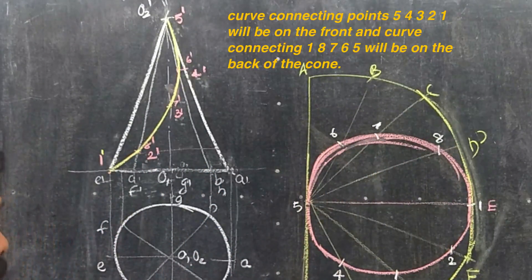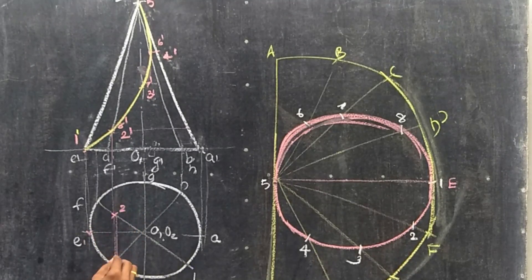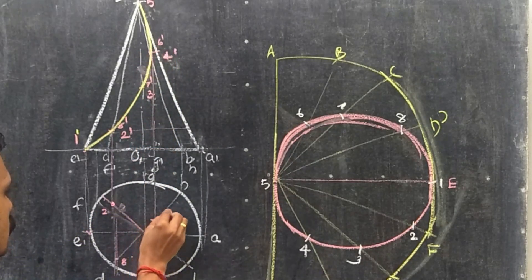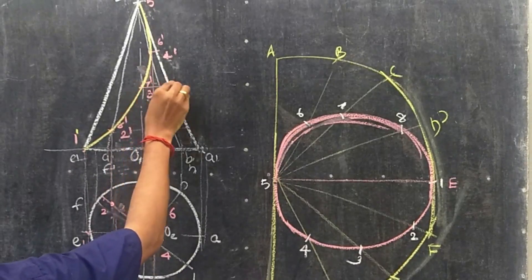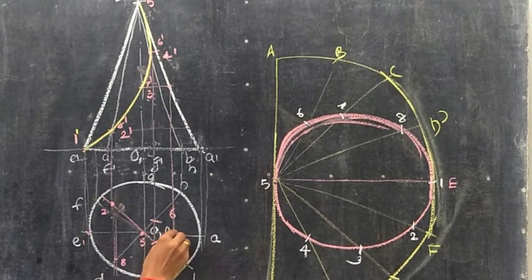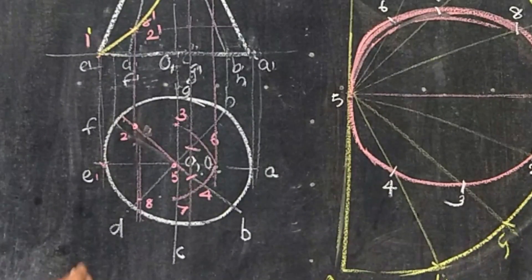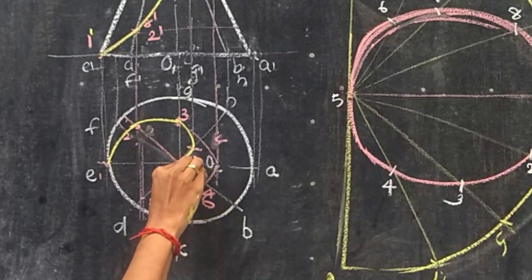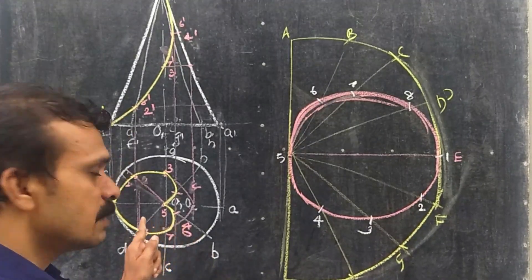Now to obtain the top view, transfer all the points. Point 1 gives 1, points 2 and 8 transfer to their respective positions. Points 6 and 4 are placed accordingly. Point 5 is marked at its position. For points 7-dash and 3-dash, transfer the distance to the line, draw a perpendicular, and rotate — giving 3 and 7. Connect all points: 1, 2, 3, 4, 5, 6, 7, 8, and back to 1. The resulting curve is called a cardioid, which you may have studied in higher engineering mathematics.